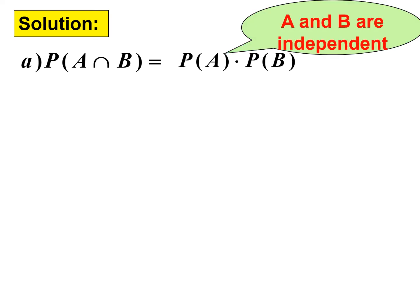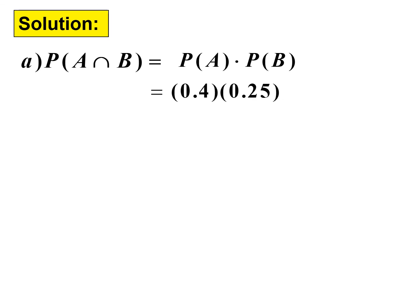Let's discuss the solution for part A: P(A∩B). Since these two are independent events, P(A∩B) = P(A) times P(B). So just multiply these two: 0.4 times 0.25. You get 0.1.